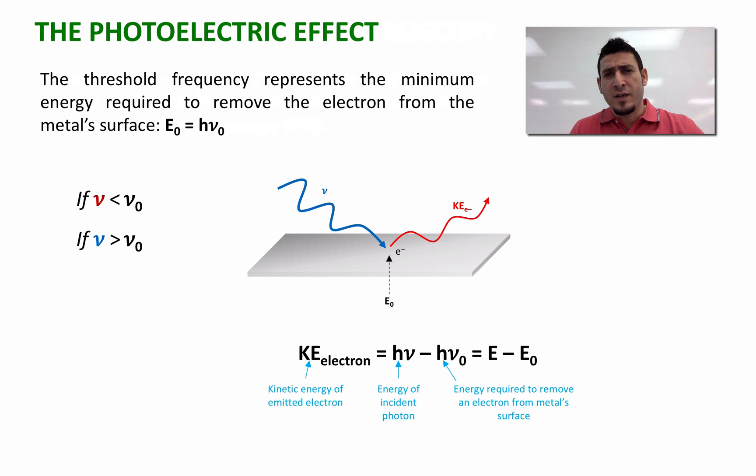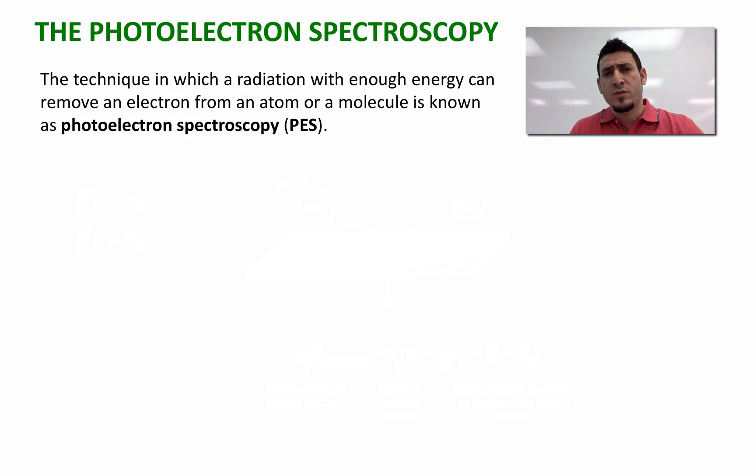Now that I defined the photoelectric effect, let's talk about photoelectron spectroscopy. The technique in which irradiation with enough energy can remove an electron from an atom or a molecule is known as photoelectron spectroscopy or PES.